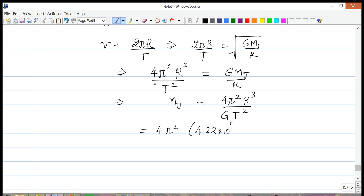We've got 4π² times R³, which is 4.22 times 10 to the 5 kilometers. Remember to convert that to meters, so this is 10 to the 8 meters—I have to multiply by a thousand and cube it—divided by G, which is 6.67 times 10 to the minus 11.